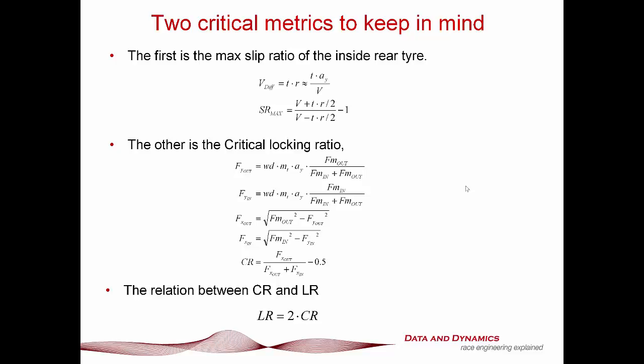Okay. The other thing that we also have to keep in mind is there are two critical metrics with regards to diff performance that we've got to have a handle on. The first is the maximum slip ratio of the inside rear tire. This dictates what you can actually, this is your hard limit of how hard you can spin the inside rear tire, which is your slip ratio max is going to be V plus T times R on 2 divided by V minus T times track times your rate on 2 minus 1.